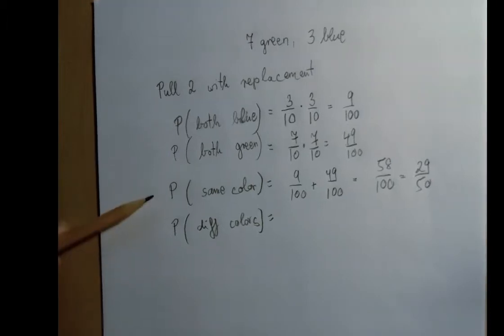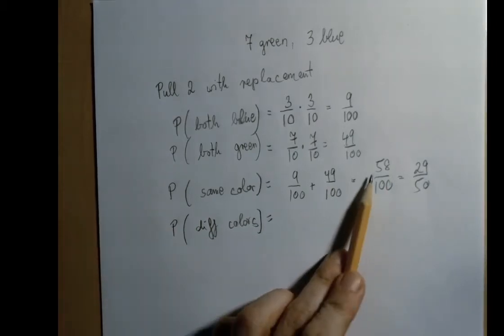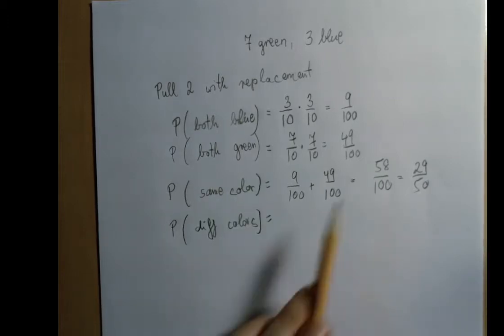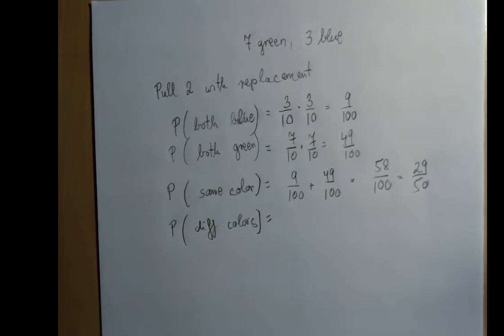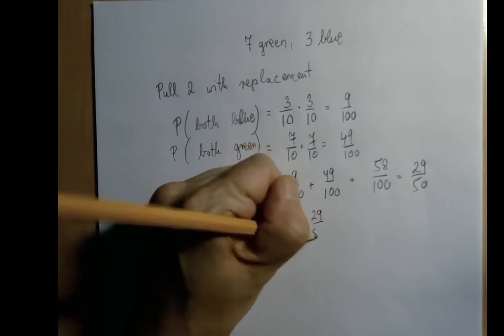Or we can say, well, these two cases should cover every case, right? They are either the same color or different colors. So we can just subtract. We can say that out of 100 possibilities, 58 times the same color, the other 42 cases have to be when the colors are different. So we can say 1 minus 29 out of 50.